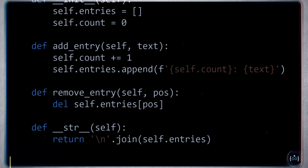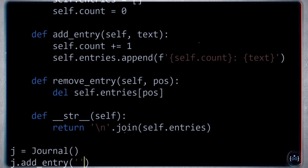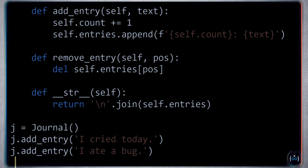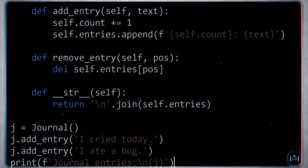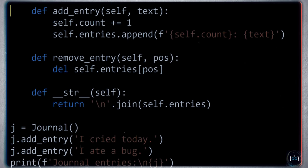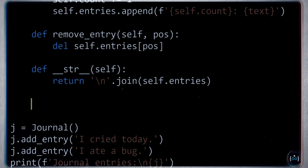We can start using this journal. We make a journal j, add some entries like 'I cried today' and 'I ate a bug', then print the journal. We get the right output — so far so good, because the journal's primary responsibility is to keep the entries and we're doing that. Now we're going to break the Single Responsibility Principle by giving the journal additional responsibilities it never really asked for.